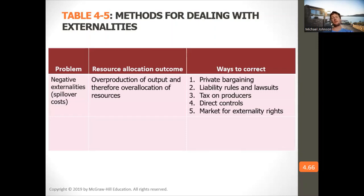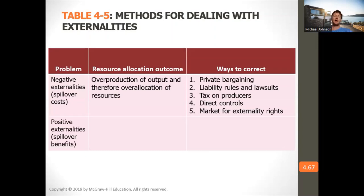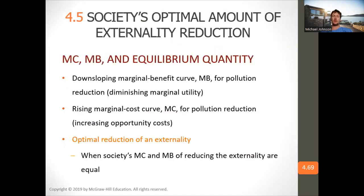Negative externalities can be corrected through private bargaining, liability rules and lawsuits, taxes on producers, direct controls, and market for externality rights. Positive externalities involve underproduction of output and underallocation of resources, and can be corrected through private bargaining, subsidies to consumers or producers, and government provision.